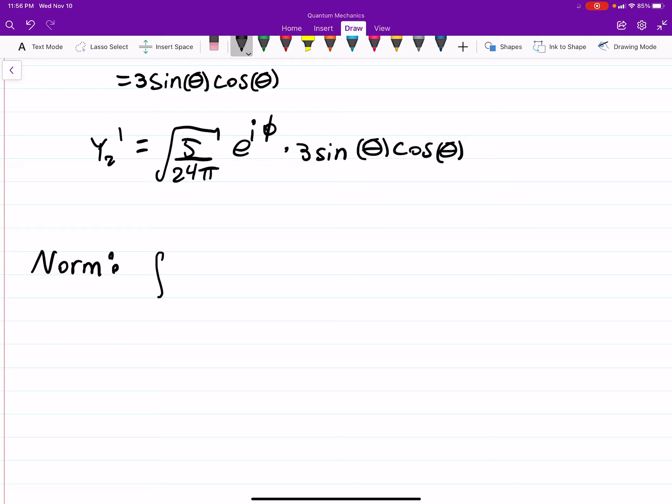To make sure it's normalized, it's just as we would do before. So we'll integrate from 0 to π, 0 to 2π, |Y₀|² sine theta dθ dϕ should equal 1. This is 1 over 4π squared, and if you do this integral you're going to get a 4π which is indeed equal to 1. So that's good, it's normalized.